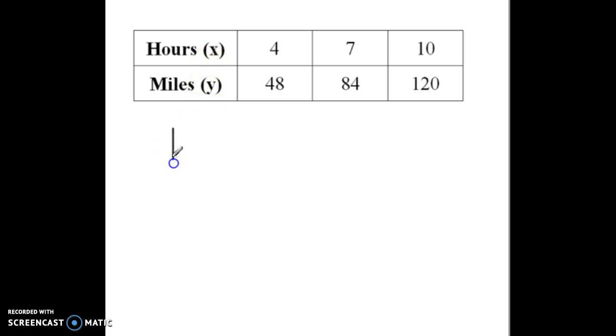So, y divided by x. So, we've got k equals y divided by x. And we're going to do, in this case, let's pick this one right here. I think it's a pretty easy one or maybe even this one over here. So, if we did the first one, it would be 48 divided by 4. So, k equals 48 divided by 4. And we get, well, let's see, that would be 12. So, k equals 12.